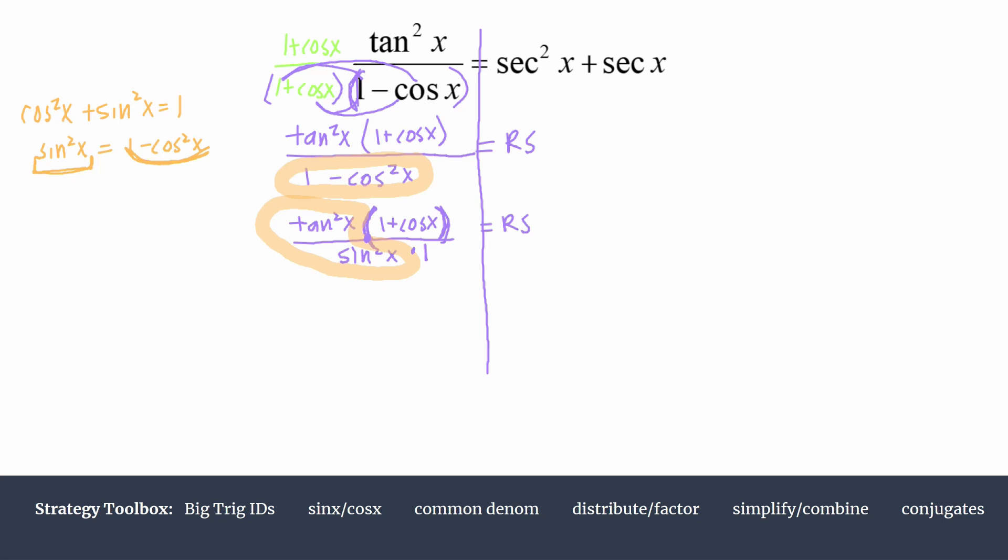Let's use a quotient identity for that tangent squared x. That means we have sine squared x over cosine squared x, and we're dividing by sine squared x. So that's like multiplying by a reciprocal here.